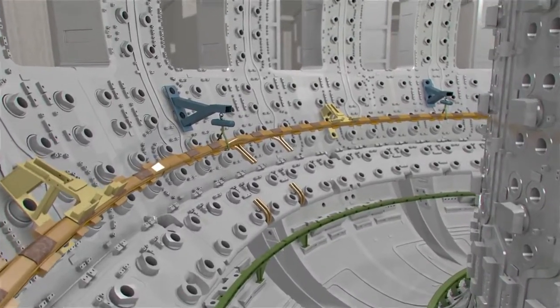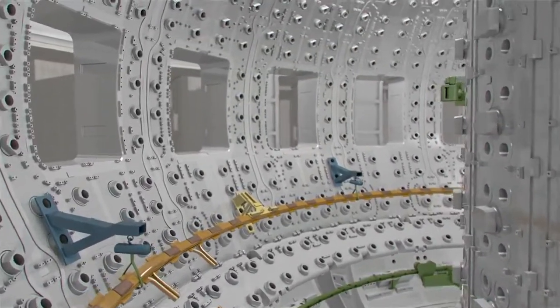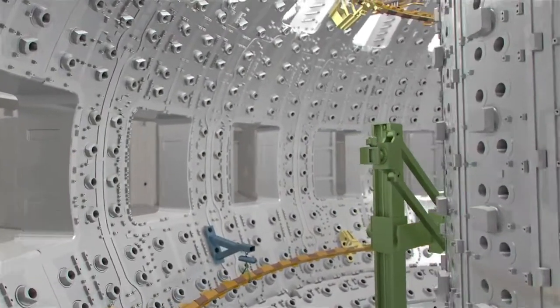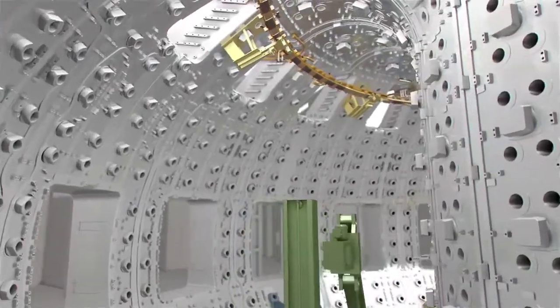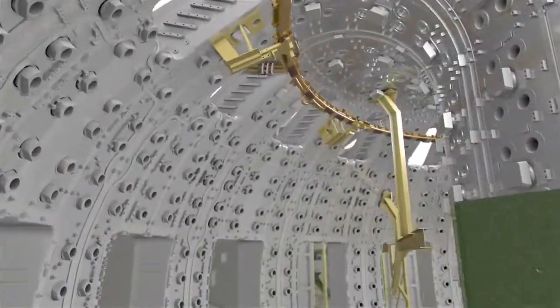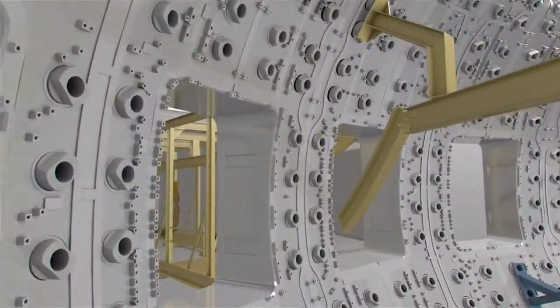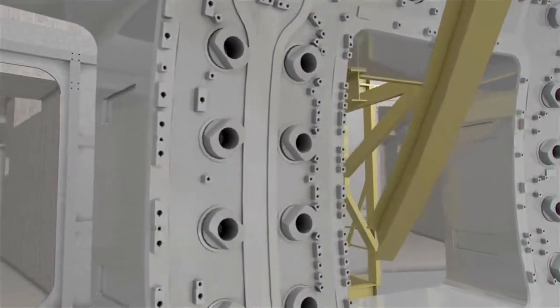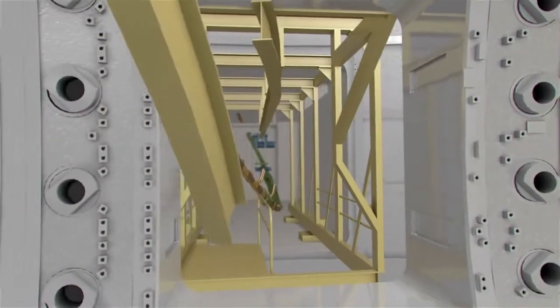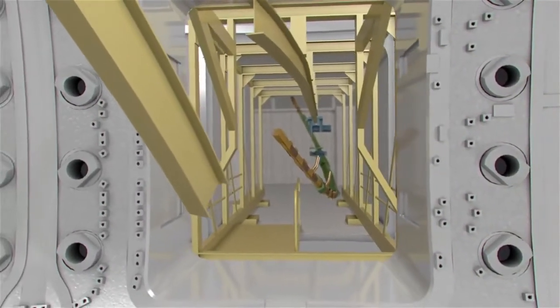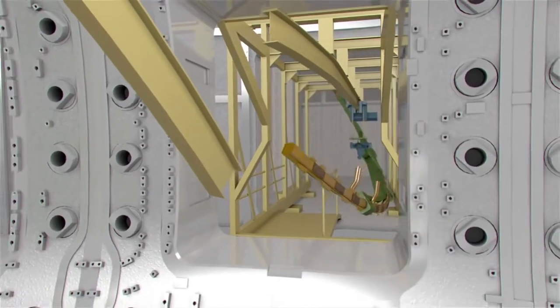Next in line are the vertical stability coils that will provide fast vertical stabilization of the plasma. Each of these coils will be delivered in 120-degree sections, with an approximate weight of 1.5 tonnes each. Each coil section is transferred from the assembly hall to the port cell using special-purpose trolleys capable of manipulating the coil and allowing it to pass through the port cell area.